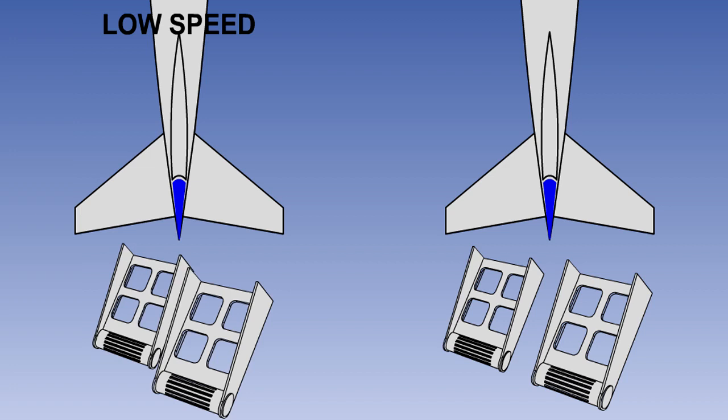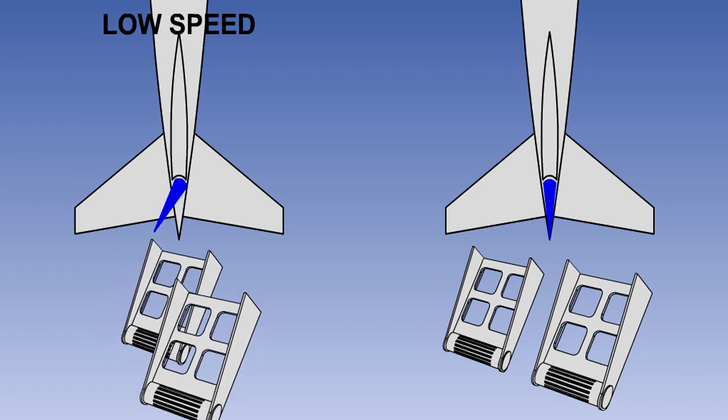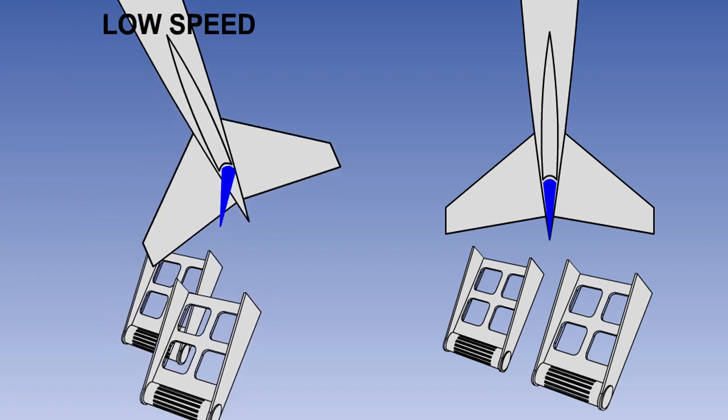With high-speed multi-engine aircraft, it is necessary to have large rudder deflections available at low speed to allow the aircraft to be controlled in the event of engine failure. However, when flying at high speed, full rudder deflection would cause excessive loads on the structure.